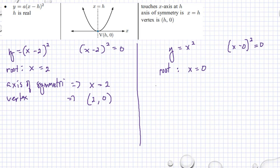Axis of symmetry is x equals 0, and vertex is 0, 0.